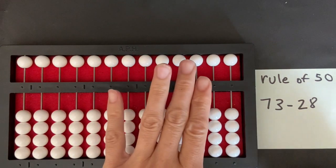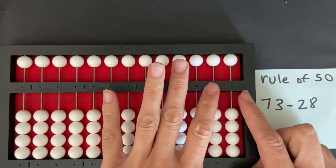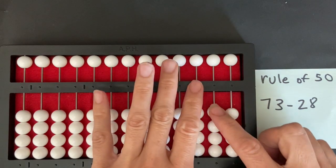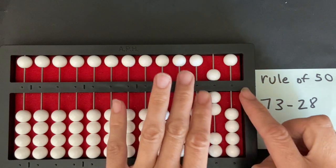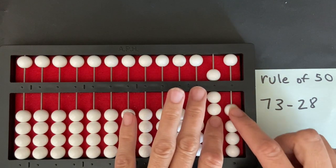I want to find the difference. I'm going to set 70 on my tens bar: 1, 2, 3, 4, 5, 6, 7. And I want to set 3 on my units bar: 1, 2, 3.